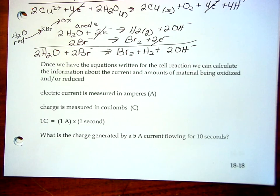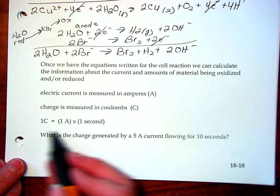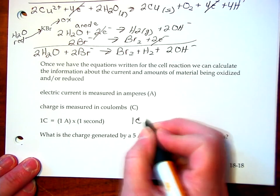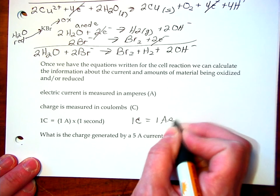We measure electric current in amperes and we measure the charge in coulombs. We talked about this in lab. We know that the definition of a coulomb is an ampere times a second. So, one coulomb is equal to one ampere second.